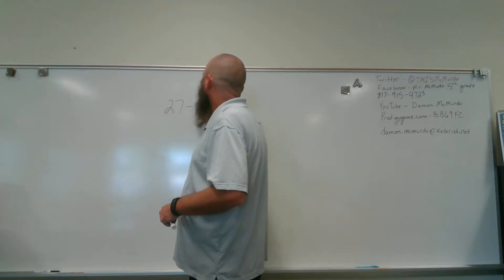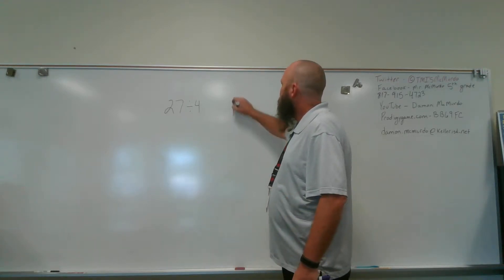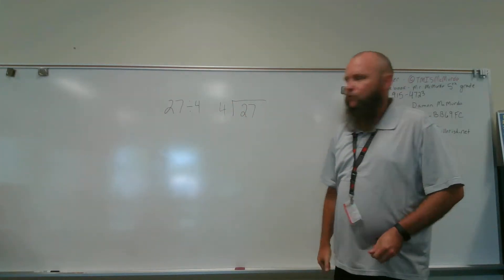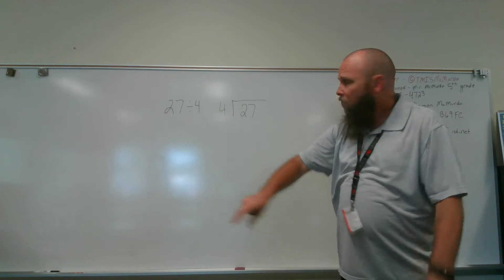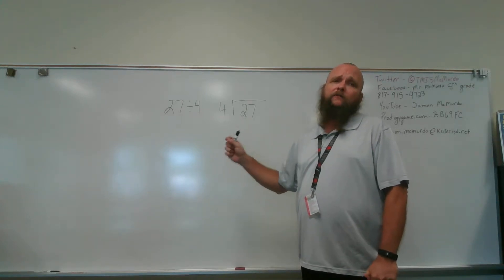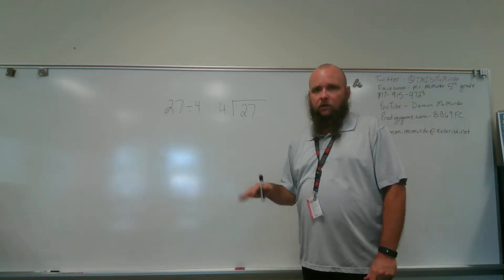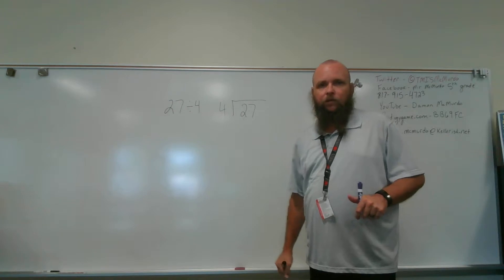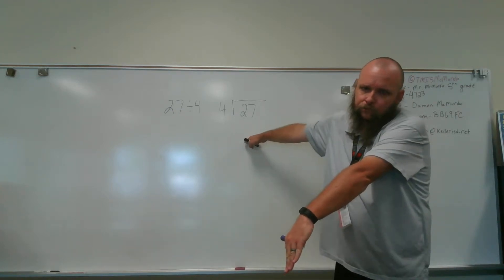So we're just using one-digit divisors today. If I have 27 divided by 4, first of all, that's how you'd say it: 27 divided by 4. Even though it's written like that, 27 divided by 4 is how you're going to pronounce it.